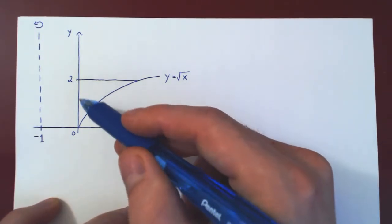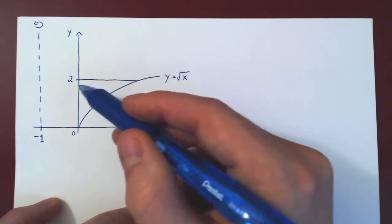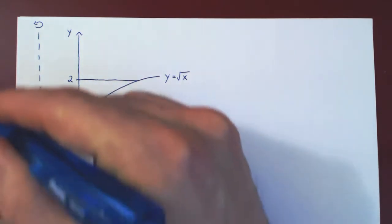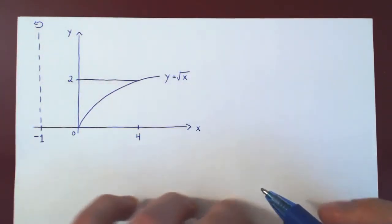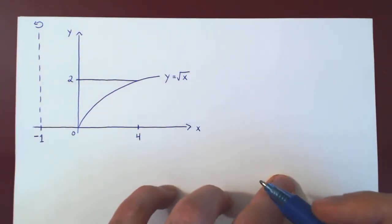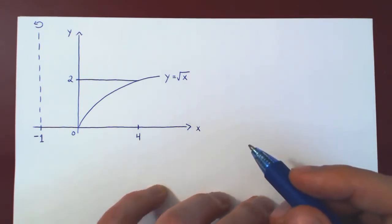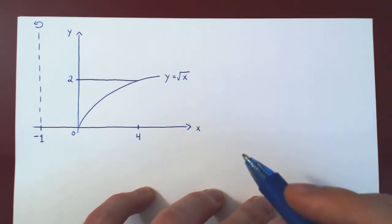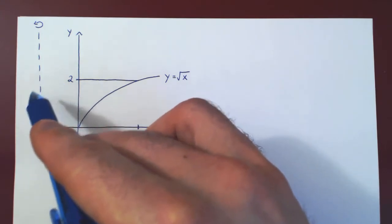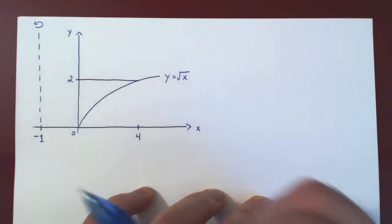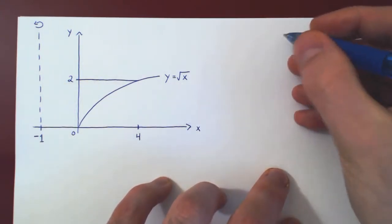You can picture revolving this region about the vertical line x equals negative 1, and what it will generate is essentially the same solid that we had in the previous two videos, but there will be a cylindrical hole in the middle.